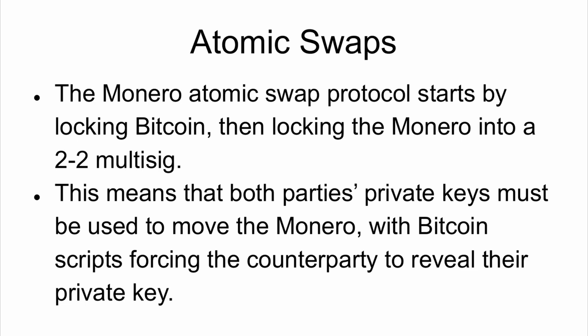For atomic swaps specifically, the Monero atomic swap protocol has people lock up their Bitcoin, but then they lock the Monero to a two-out-of-two multi-sig. This means both people must agree in order to move the Monero, and that wouldn't be atomic. Obviously, if one person goes offline, the money's burned. Because of that, Bitcoin scripts step in and force whoever receives the Bitcoin to reveal their private key. When they reveal the private key, the other counterparty can take the two-of-two multi-sig — they'll have the two keys — and be able to spend the Monero however they want.